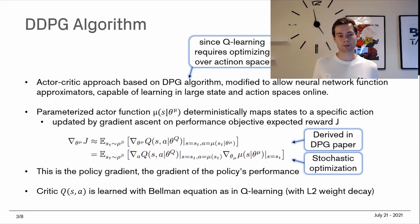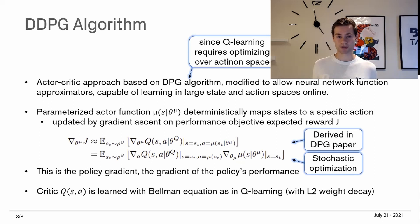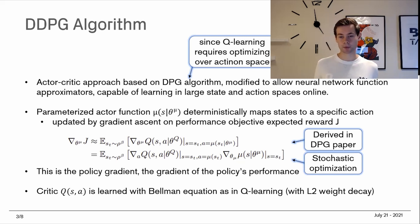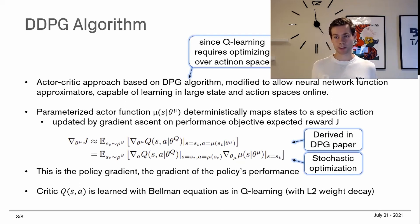In this framework we use a parameterized actor function mu that deterministically maps states to a specific action. In the deterministic policy gradient paper, you always follow a deterministic policy — you have a behavioral policy you're using to learn from, but the target policy you're optimizing is deterministic by definition. This is updated by gradient ascent on the performance objective, which is the expected reward. Rather than optimizing globally, you follow the gradient with gradient ascent, which greedily takes you toward better action values.